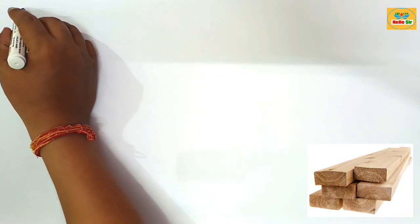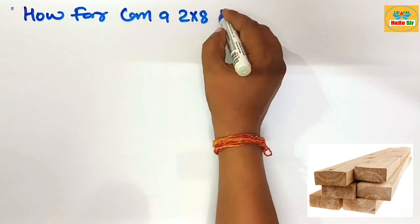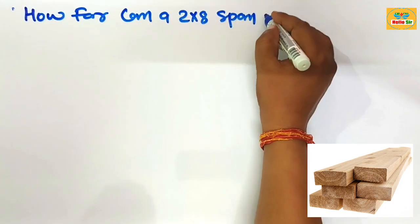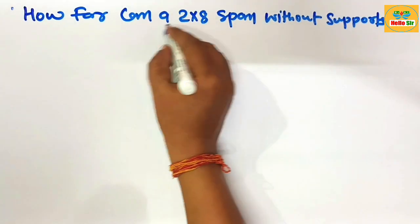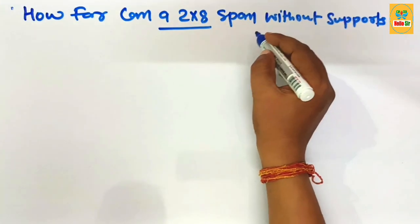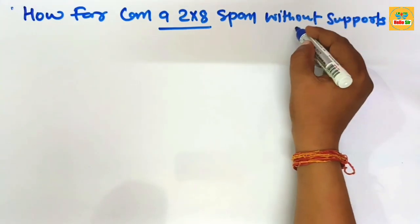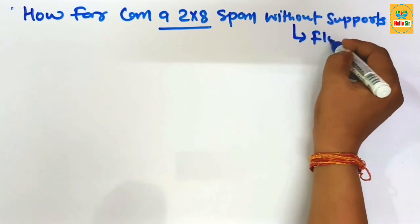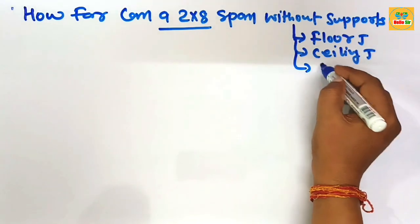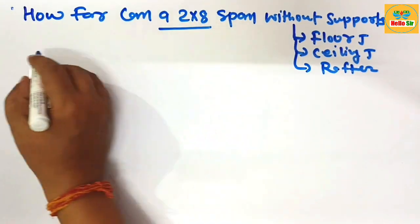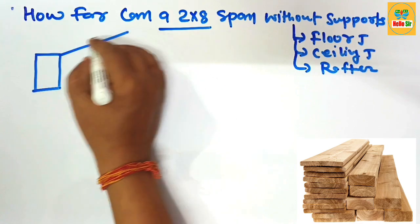Today's video covers how far a 2 by 8 dimensional lumber can span without support. You will find out the maximum span for a 2 by 8 dimensional lumber as a floor joist, ceiling joist, and rafter. First, a rough diagram is made to understand the dimensions of the lumber.